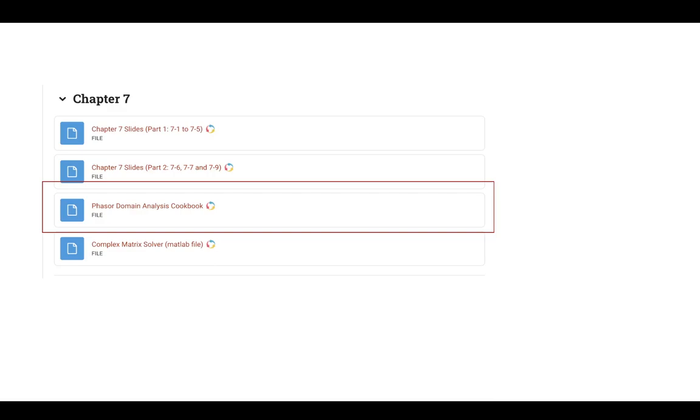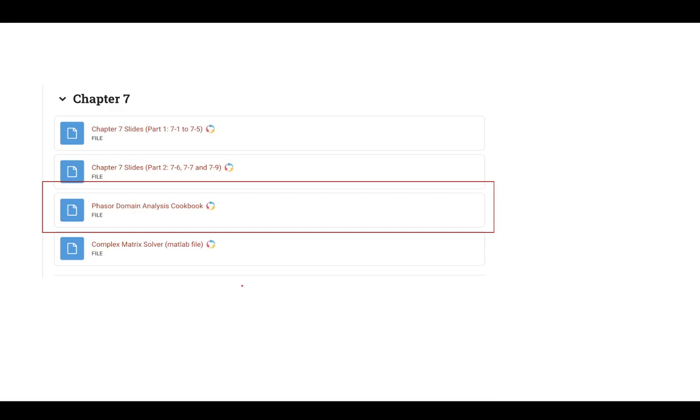Now, there's a helpful cookbook that I've made for those of you in my class, and that is on our Moodle page, and it has a number of relationships, including the complex numbers here. And then this identity, this is the main one that we're going to be using frequently in this chapter. So thank you, and I'll see you in the next video.